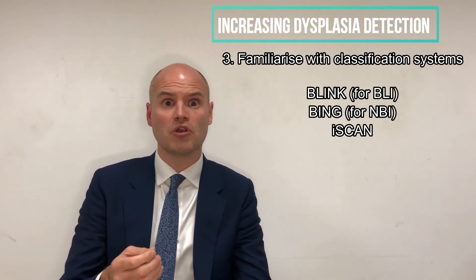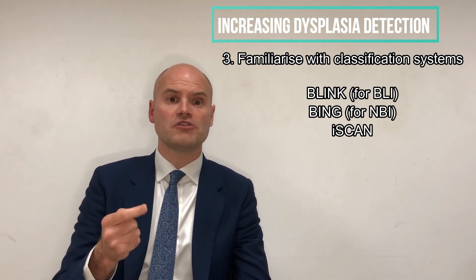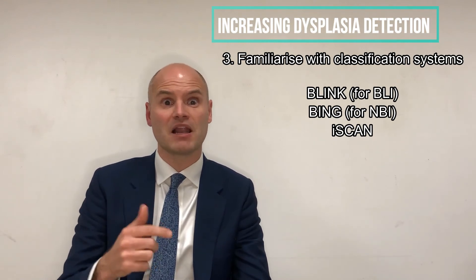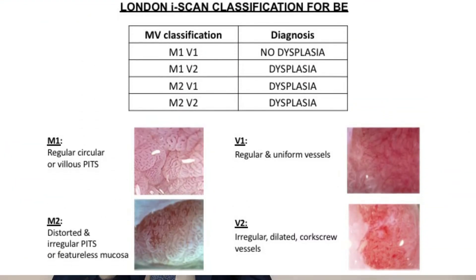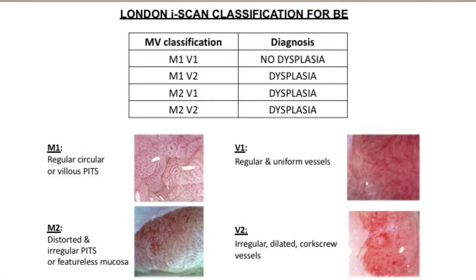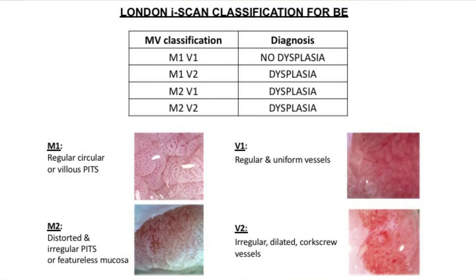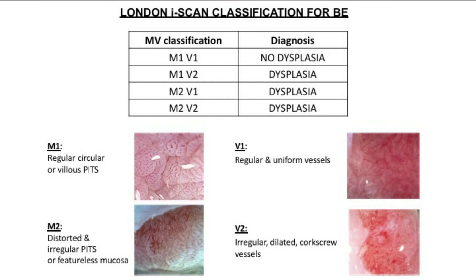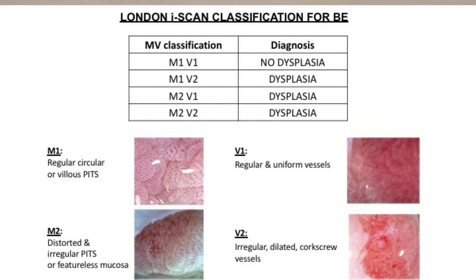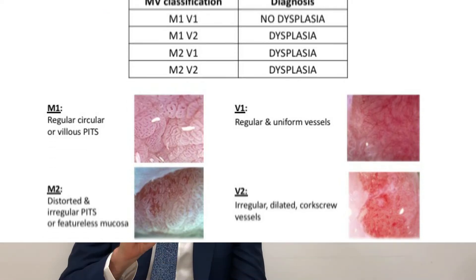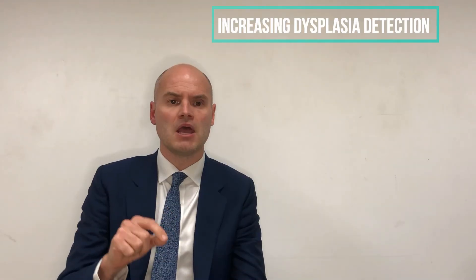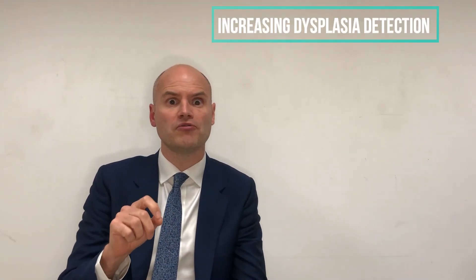There are classification systems you can look up — we'll link to them on our site — such as the BLINK classification, the BIN classification, or the i-scan classification, where one looks for mucosal pattern changes, such as a move away from the tubular villous pattern to something amorphous or irregular, or vascular changes where you find fibrillary or thickened vessels that can indicate dysplasia.